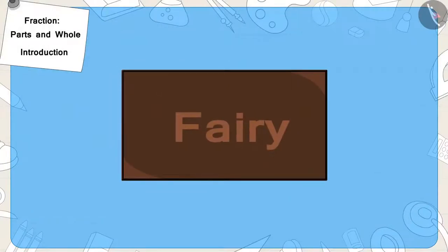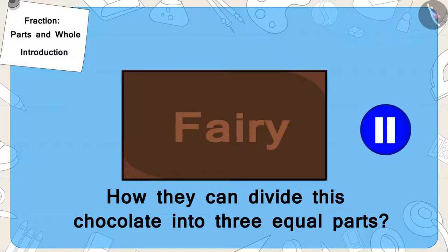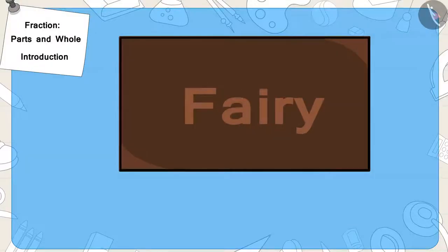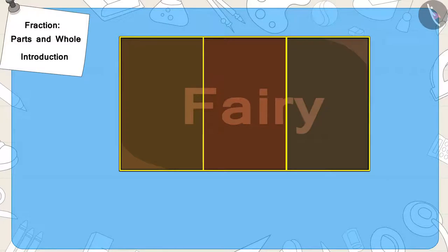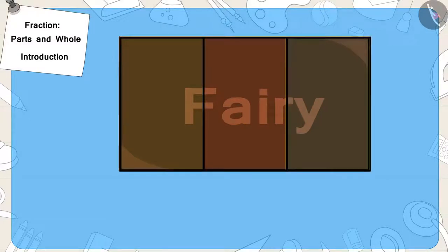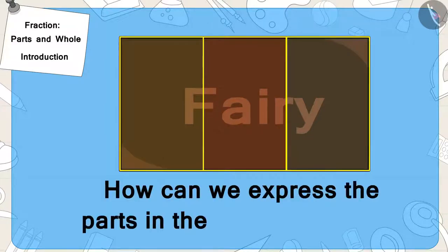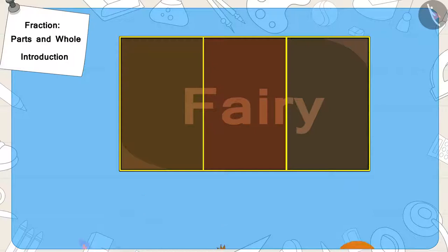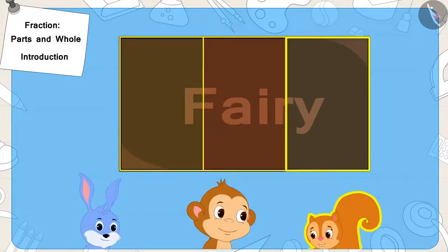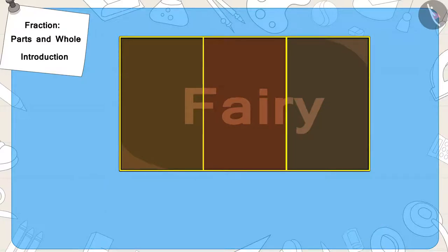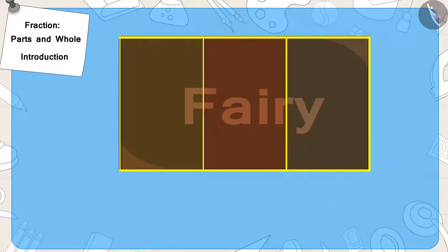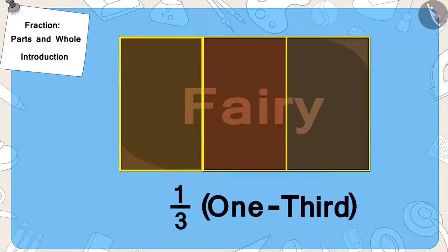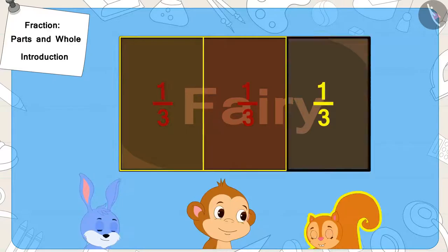Children, can you tell how they can divide this chocolate into three equal parts? If you wish to, you may stop the video and find the answer. Well done, children — you have divided this correctly. There are a total of three equal parts of the chocolate and each one will get one part of it. We can write it as a fraction in this way. We also call this one-third of the whole chocolate. In this way, all three will get one-third of the chocolate.